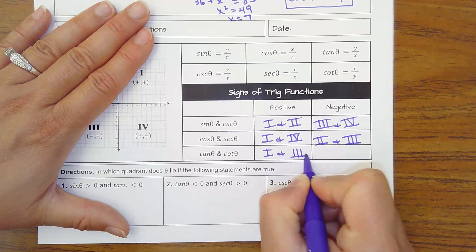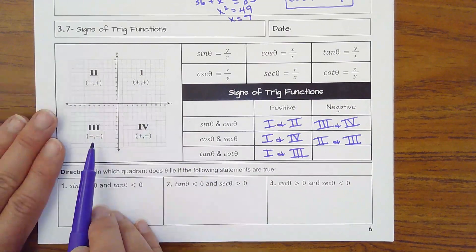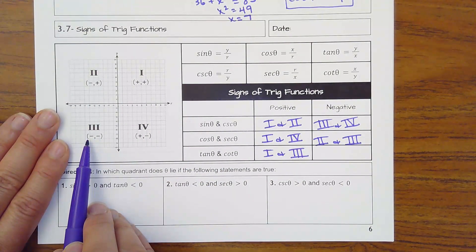The other way to think about it is when you're dividing y by x. If I divide a positive by a positive, I'm positive. Or if I divide a negative by a negative, I'm positive.